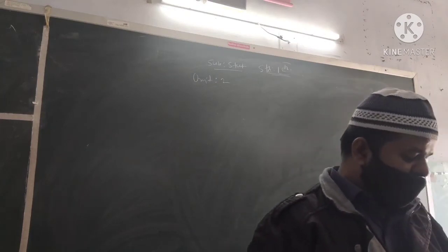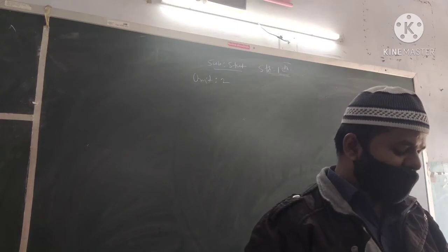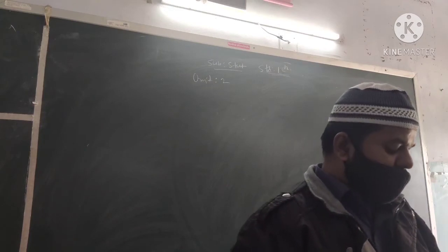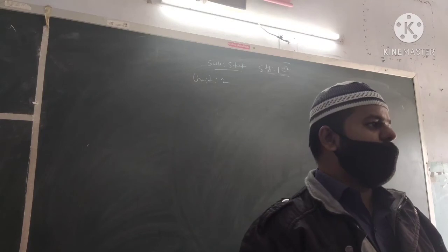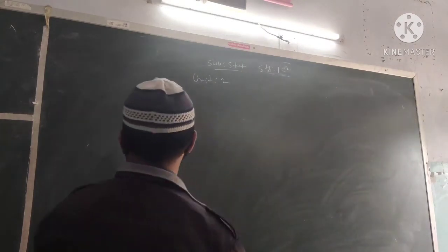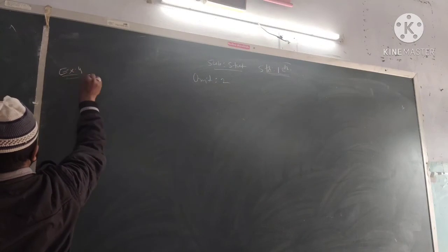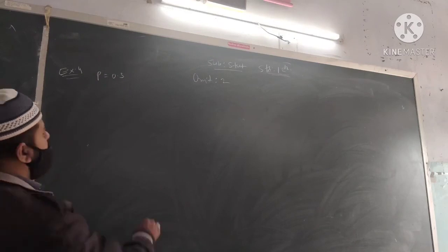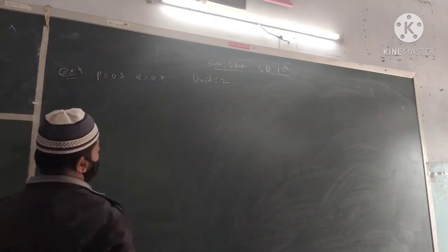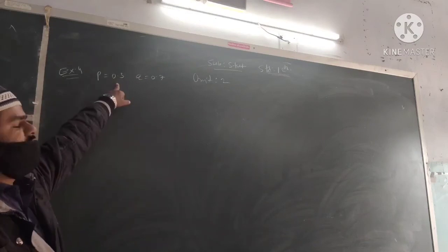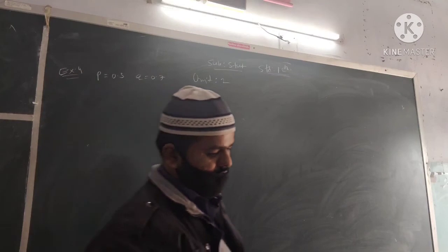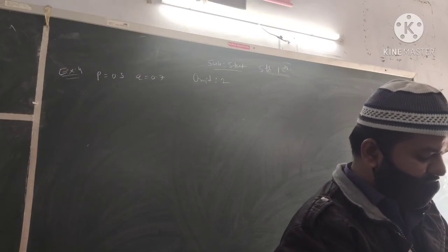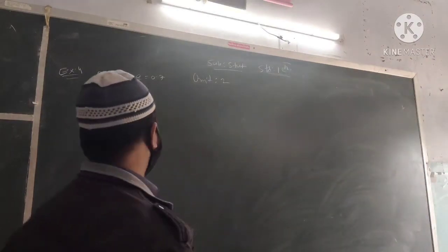The probability that a student studying in 12th standard of science stream will get admission to the engineering branch is 0.3. So P equals 0.3, and Q equals 0.7, which is 1 minus 0.3. Now 5 students are selected from the students who studied in this stream, so n equals 5.